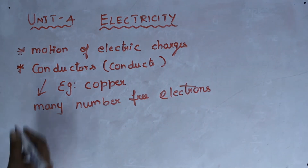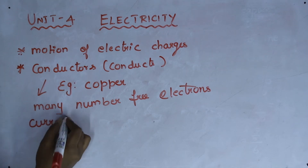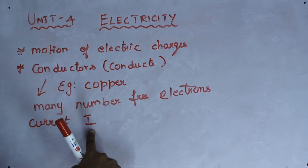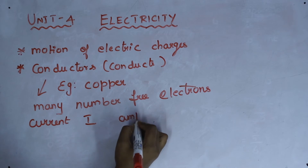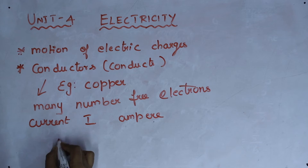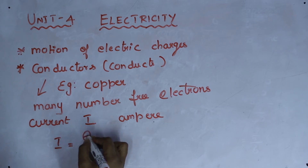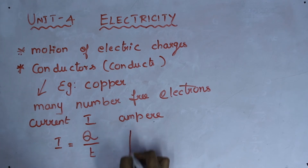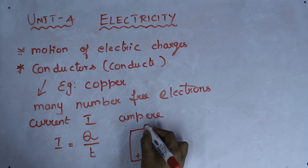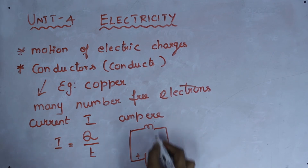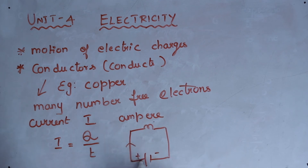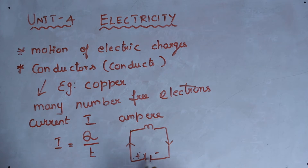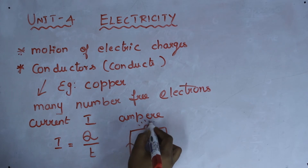Current is represented by the letter I, and the SI unit of current is ampere. The formula for current is I = Q divided by t, where Q is charge and t is time. In any circuit there are two terminals — a positive terminal and a negative terminal. Current flows from the positive terminal to the negative terminal, and when current flows the bulb starts glowing.